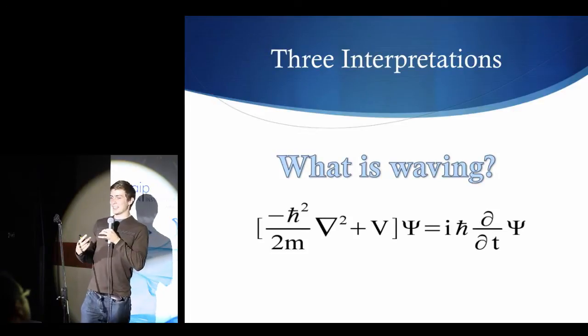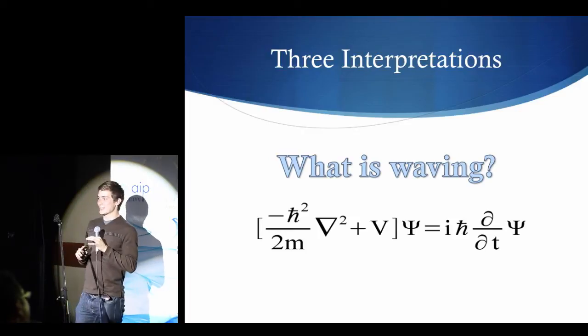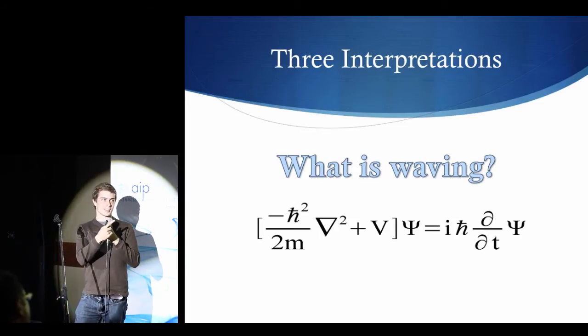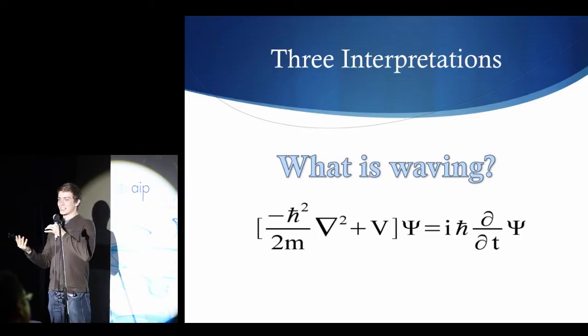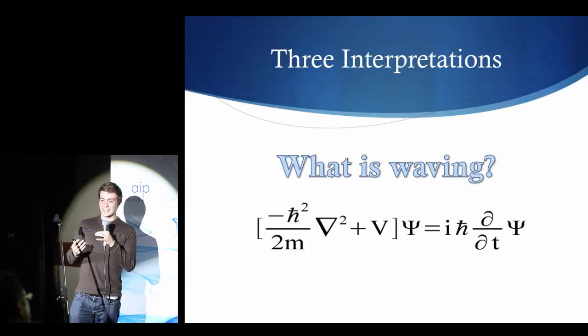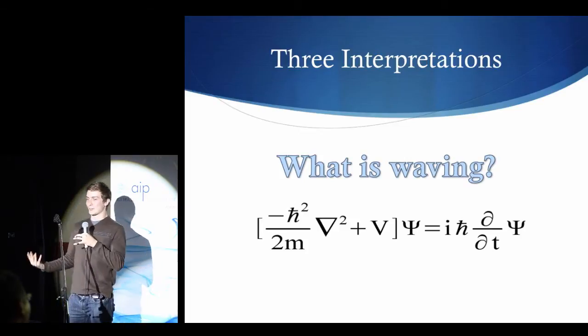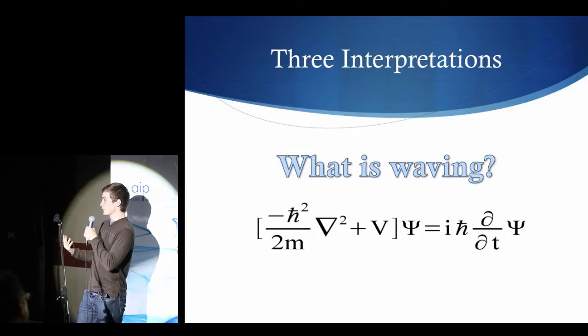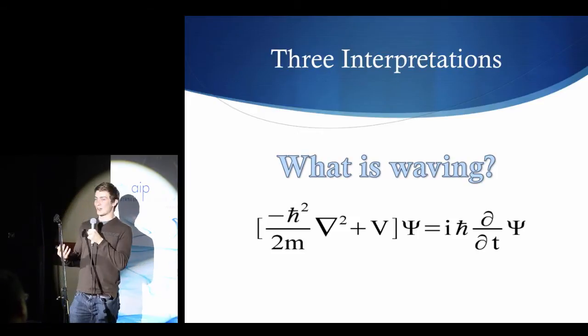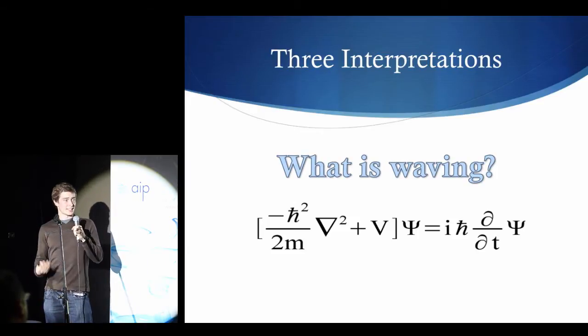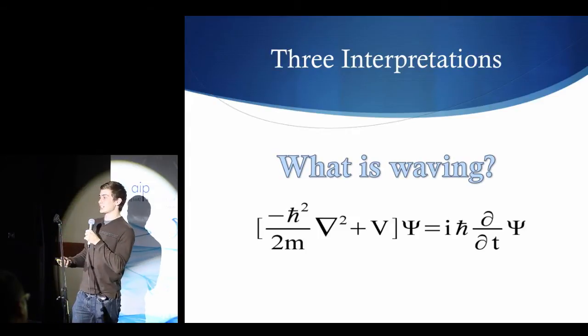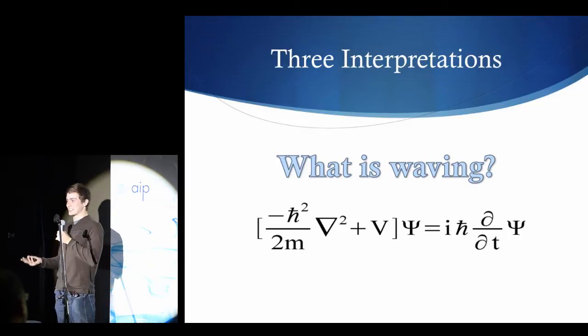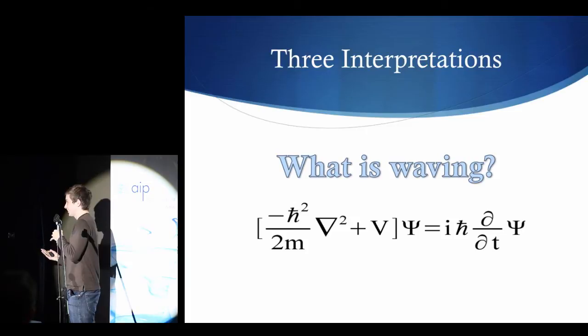Now, Schrödinger came up with this famous wave equation. You don't need to understand what these fancy symbols are. I'm sure some of you do. This is the sort of thing we work with. And this equation, Schrödinger actually came up with it by, he didn't derive it, he just kind of guessed until he got it right, which is pretty ridiculous, right? But it's pretty awesome because this is one of the most famous and most successful equations in all of physics. And it describes these bizarre things such as superposition and entanglement. So the next obvious question, since it's a wave equation, what the hell is waving?